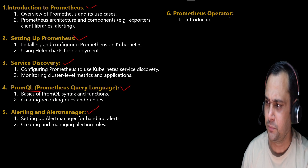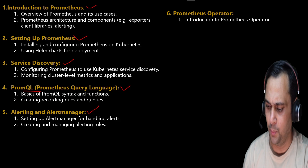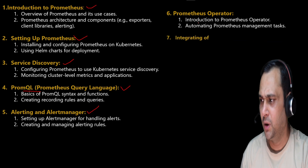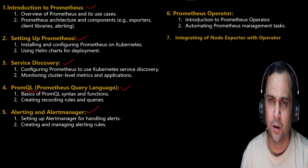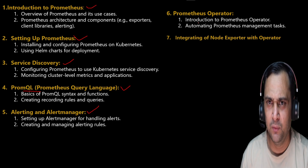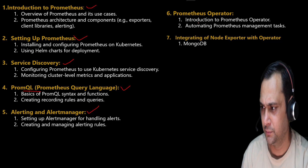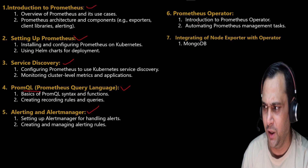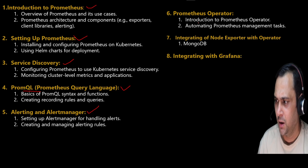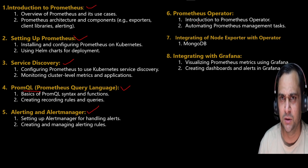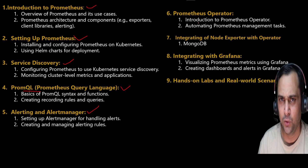Today we are going to cover the Prometheus Operator. First, we will cover an introduction to the Prometheus Operator and how to automate Prometheus management. Further, we will talk about integrating the Node Exporter with the operator — when we use this operator, it automatically installs Node Exporter on all nodes. After that, we will use MongoDB as an exporter and integrate with Grafana for visualizing Prometheus metrics, creating dashboards and alerts in Grafana.